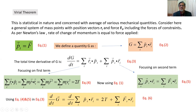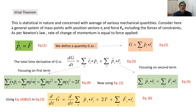For the second term, summation over i of P-dot-i dot Ri: from equation number one, P-dot-i equals Fi, so the summation becomes Fi dot Ri. Combining both terms, the total time derivative DG/DT equals two times kinetic energy plus summation over Fi dot Ri.